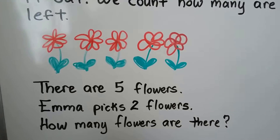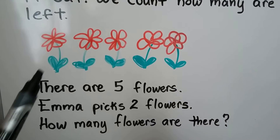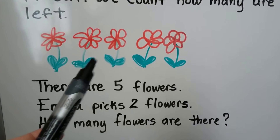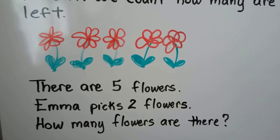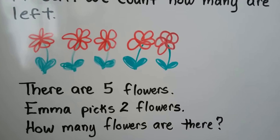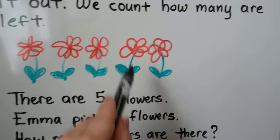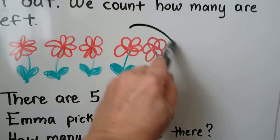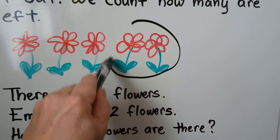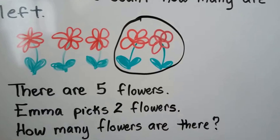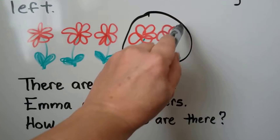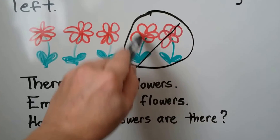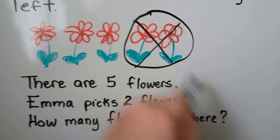There are five flowers — one, two, three, four, five. Emma picks two flowers, so let's circle two flowers. Those are the ones she picked. We can cross them out because she picked them and they're gone.